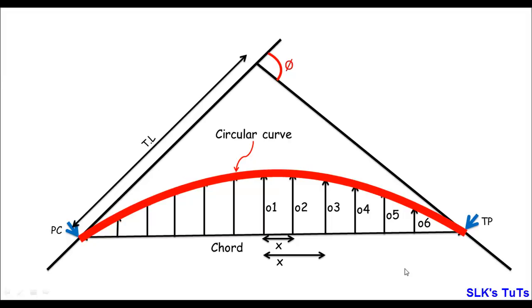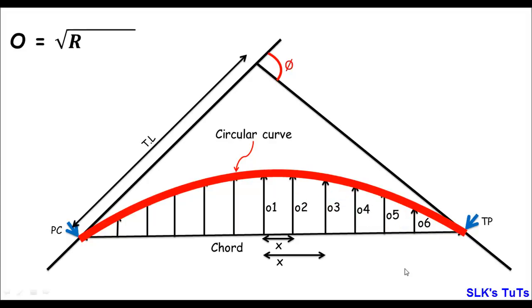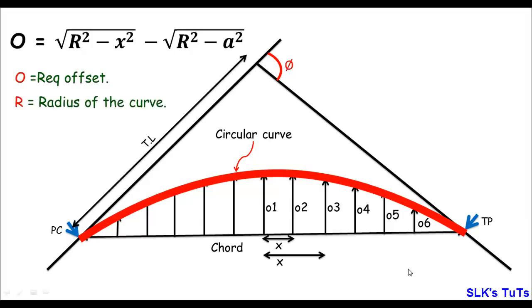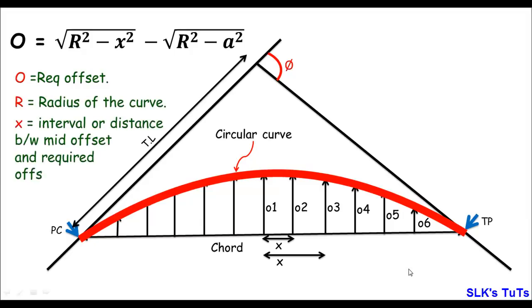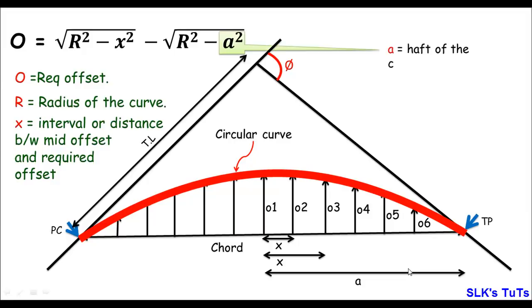When offsets are taken for one side of the chord, we then take offsets for the other side. After taking all these perpendicular offsets or ordinates, we join the upper limit of each offset, which gives us the horizontal circular curve — our requirement in this method. The formula for each offset is: O = √(R² − x²) − √(R² − A²), where O is the required offset, R is the radius, x is the distance from the middle offset to the required offset, and A is half the chord length.